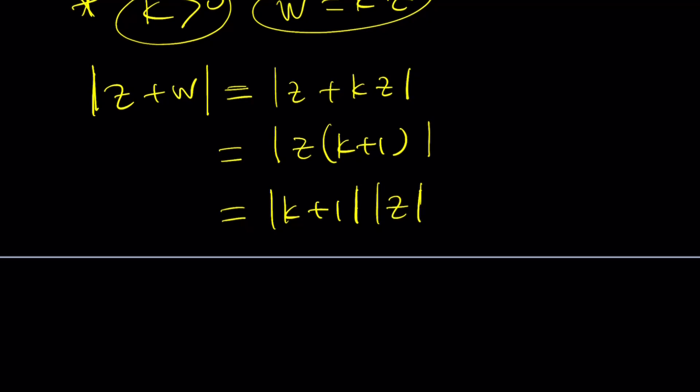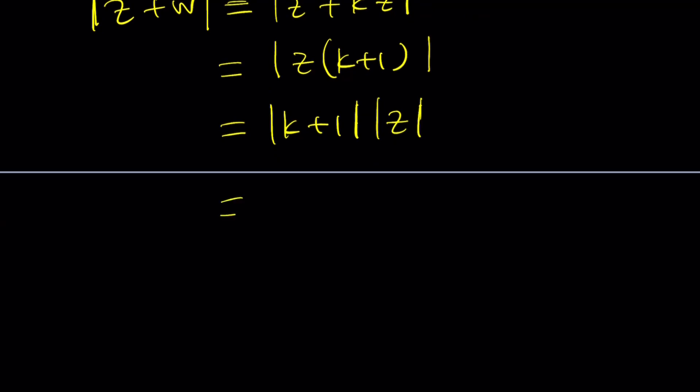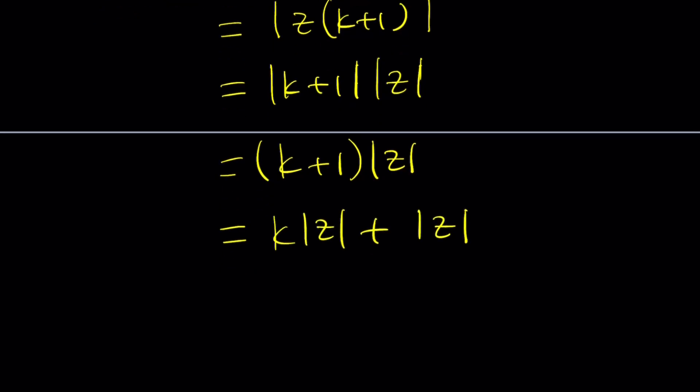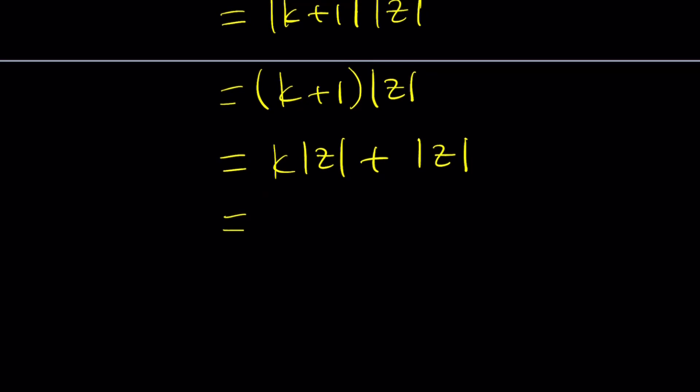And then, which means that I can just write it as K plus 1 because K plus 1 is positive. I don't need absolute value. But this is going to be awesome because now you can go ahead and distribute. And then I can put the K inside.